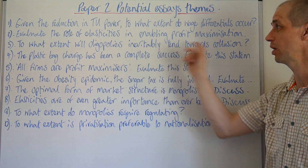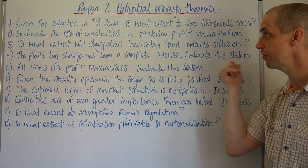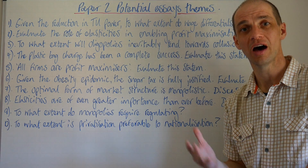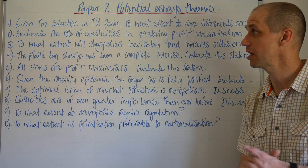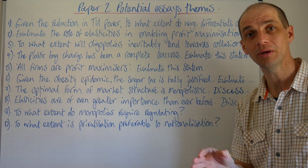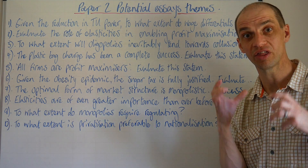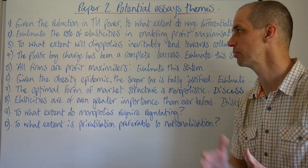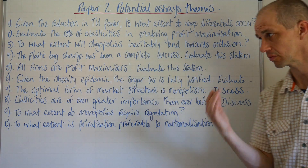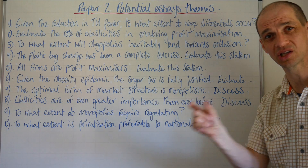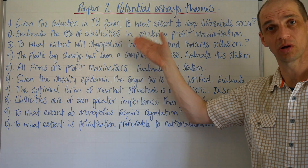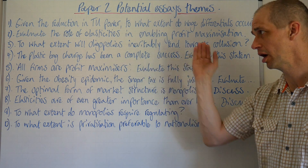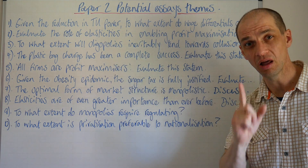Number three: to what extent will oligopolies inevitably tend towards collusion? That's a very nice essay theme. Alternatively, it might be framed as 'oligopolies are the best form of market structure — discuss,' getting you to weigh up why oligopolies might or might not be the best form of market structure. This is potentially a lovely question.